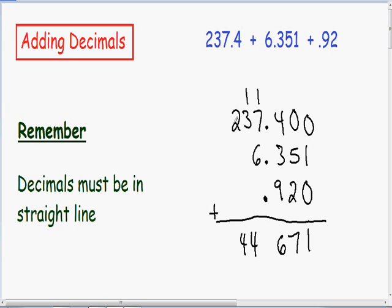And in our hundreds unit, we just have a 2. So I'll just bring down the 2. The last thing we need to do is place our decimal. Just keep them in a straight line and place a decimal exactly below all the rest of them. So our final answer is 244.671.